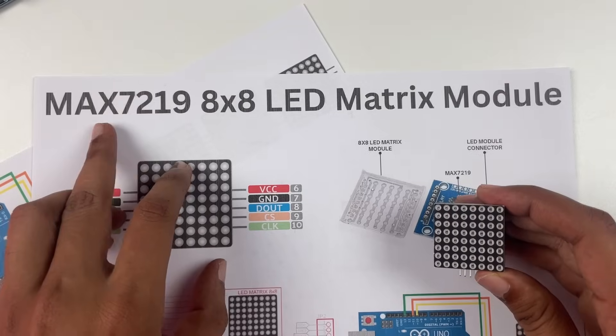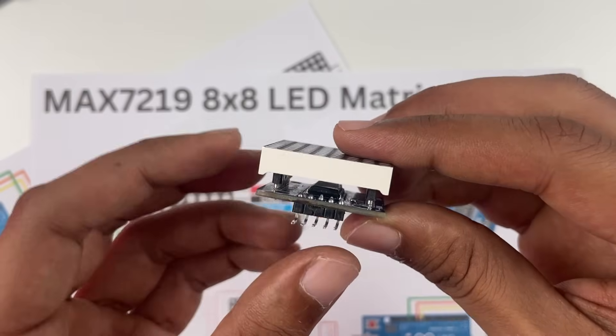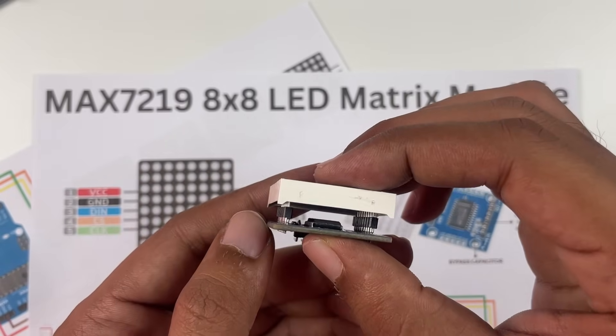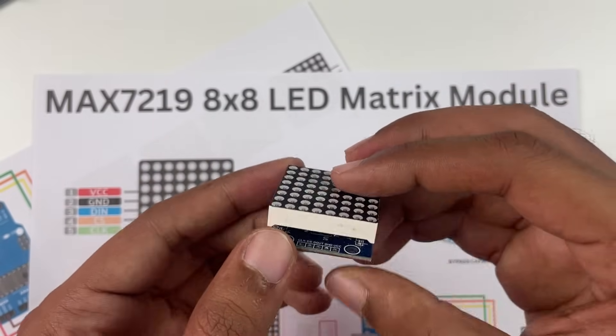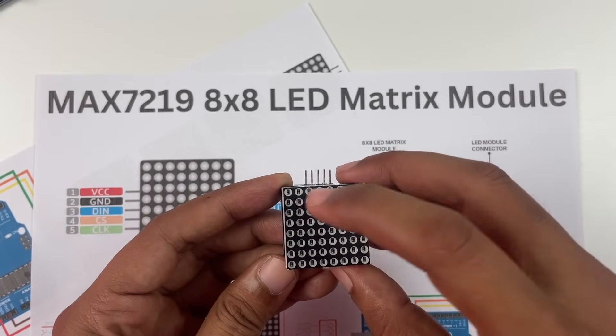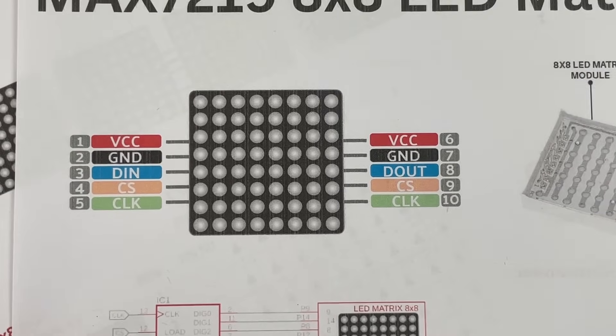It also has the name MAX7219 because the module has a display driver IC which you can see inside here, and the part number for this display driver IC is MAX7219. Hence this whole module is called MAX7219 8x8 LED matrix module.